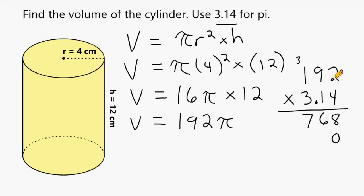And then for the next place value, we have 1 times 192. So we can just write 192 here. Now we have to write two zeros.